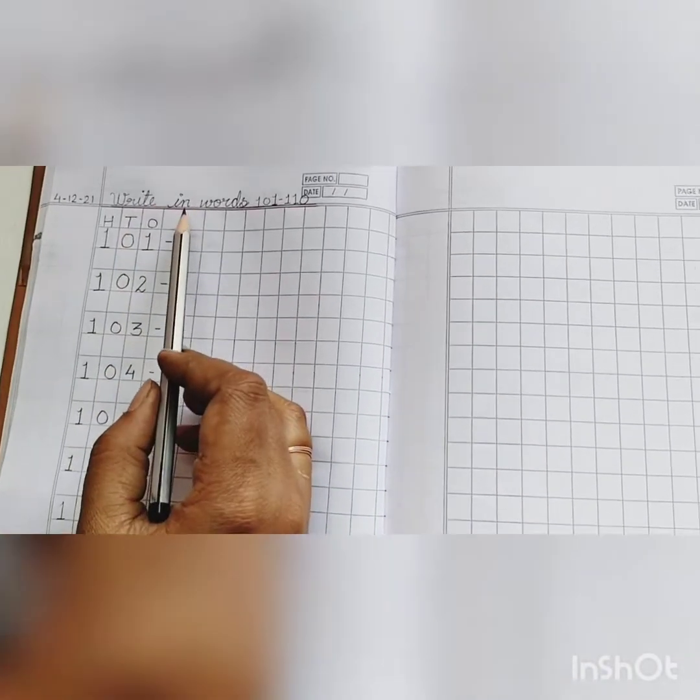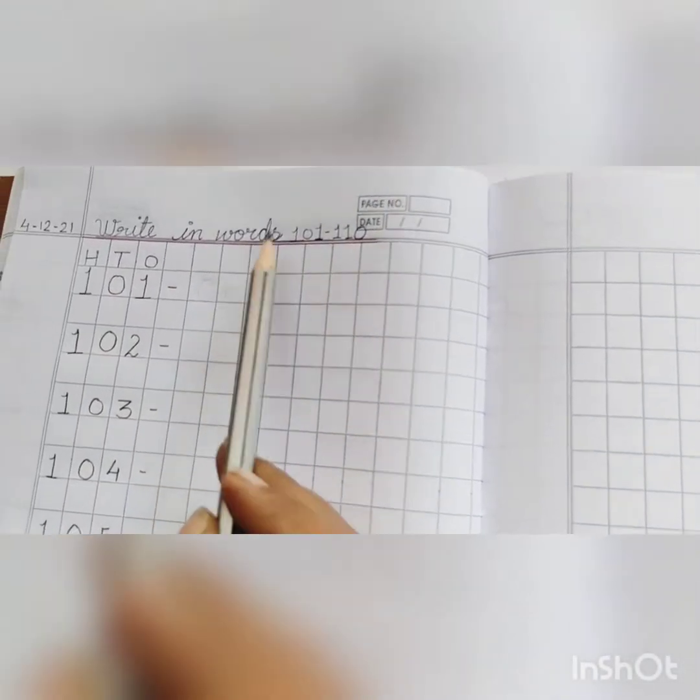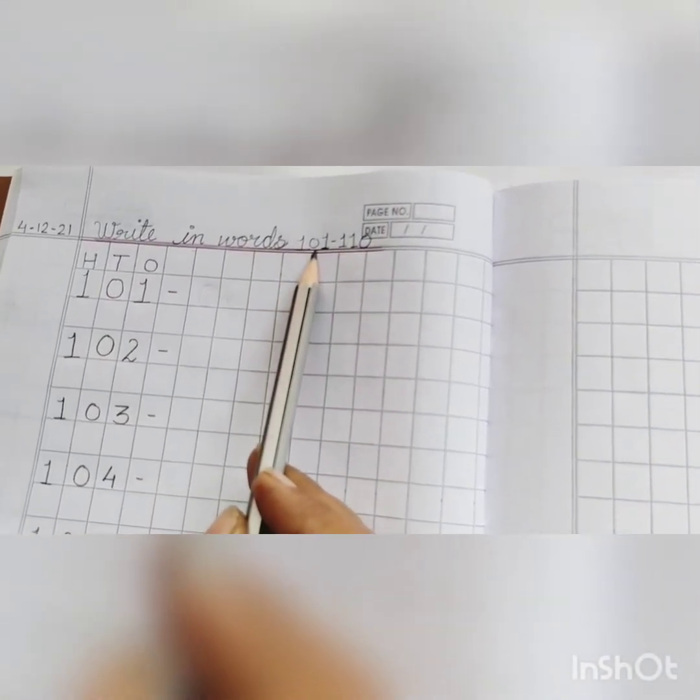we have already learnt numerals and their number names 1 to 100 in our previous videos. Today, we will learn numerals and their number names 101 to 110. Write in words 101 to 110.